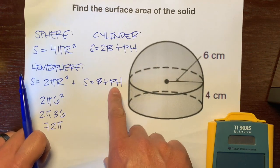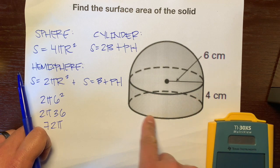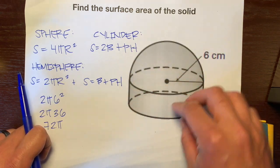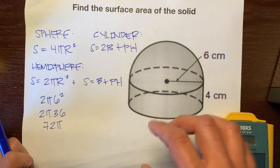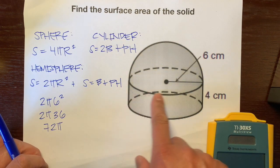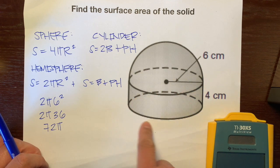Now, we have the surface area of just this hemisphere, this top part of this composite solid. Now, let's get the surface area for this cylinder that isn't covered up by the hemisphere. Just the cylinder that's wide open to put squares on.